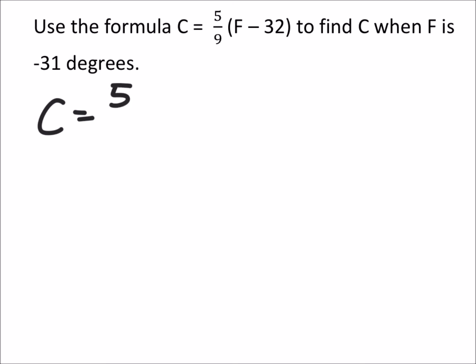We got C equals 5 ninths times the Fahrenheit. But right here, we can see the Fahrenheit is negative 31. Of course, we'll subtract 32 from that. So we can do the parentheses first. In the parentheses, we've got negative 31 minus 32, which is negative 63.